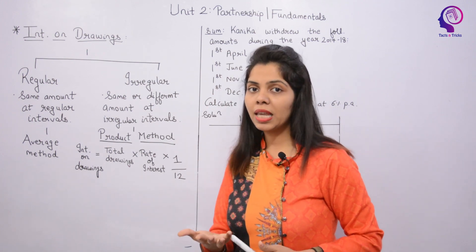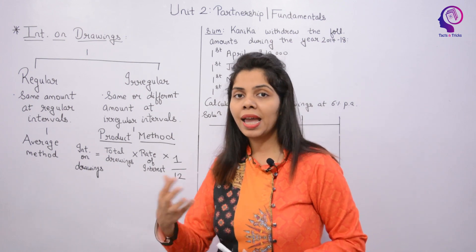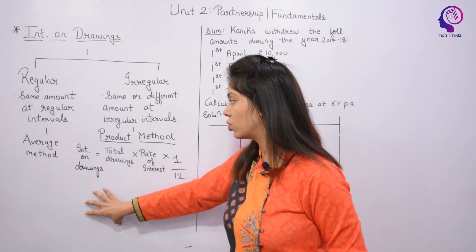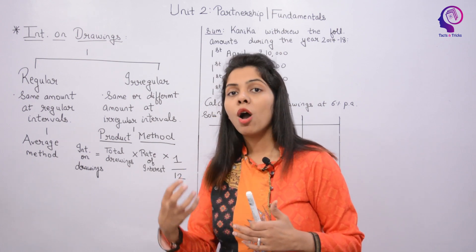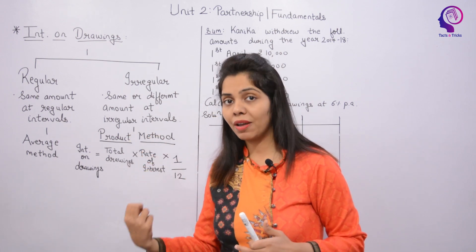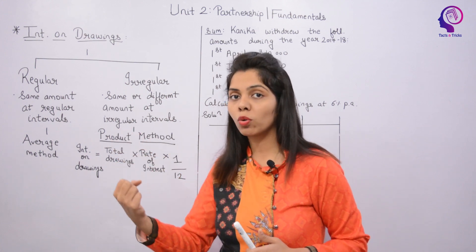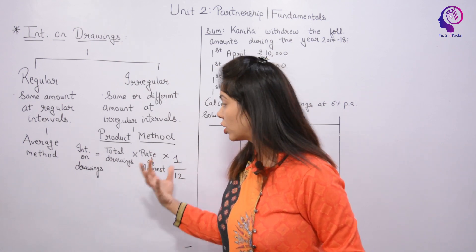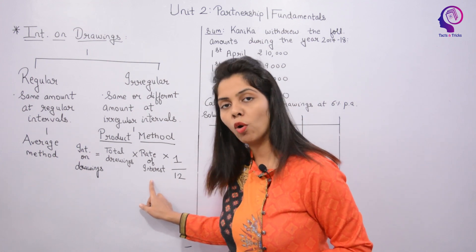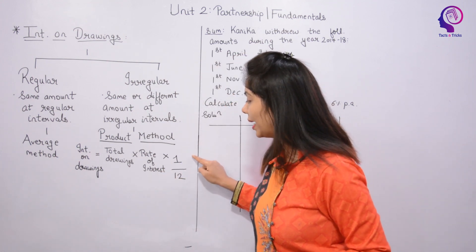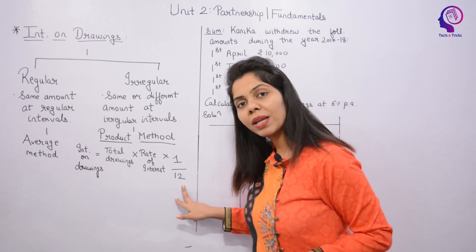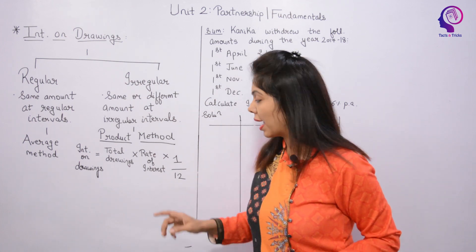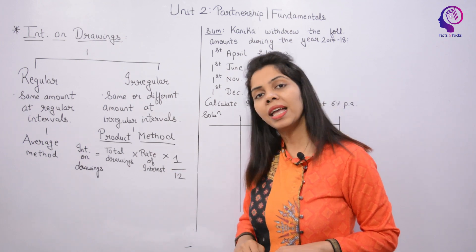What happens in this method? A partner is doing irregular drawings at irregular dates. The formula is: Interest on Drawings = Total Drawings × Rate of Interest × (1/12). We multiply each drawing amount by the number of months remaining after the drawing date, sum those products to get Total Drawings, then multiply by the rate and 1/12 because there are 12 months in a year.